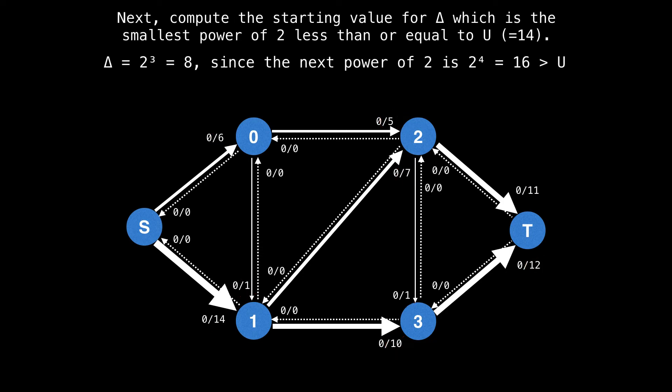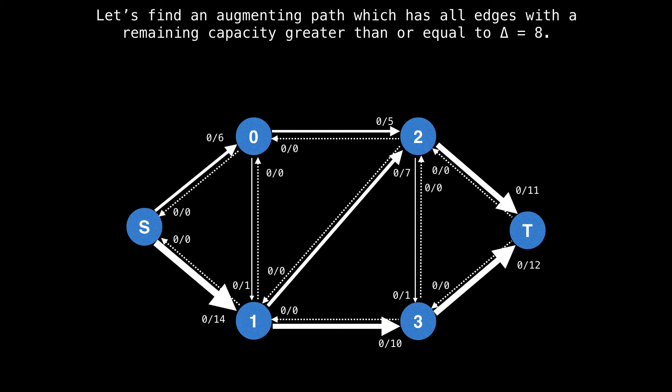Next compute the starting value for delta, which is the smallest power of two less than or equal to U, which we know is 14. Therefore, the starting value of delta is eight since the next power of two after eight is 16, but 16 is larger than 14.